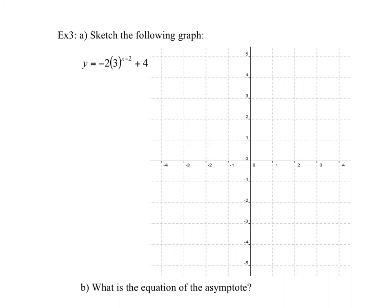The last page, example 3: sketch the following graph. This is a combination of several transformations. The base graph is 3 to the power of x, so we start with key points at (0, 1) — since any exponential passes through (0, 1) — and because the base is 3, we also have the point (1, 3).